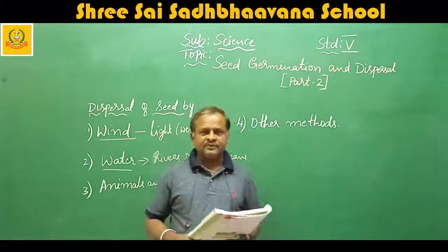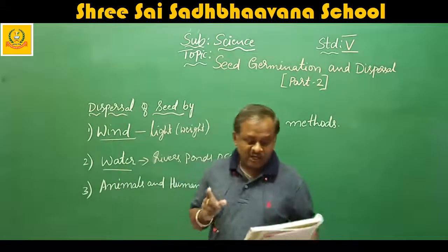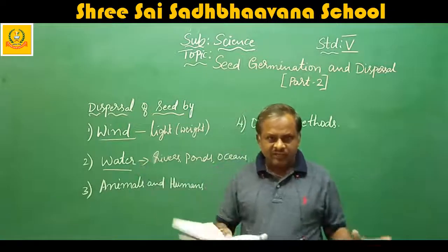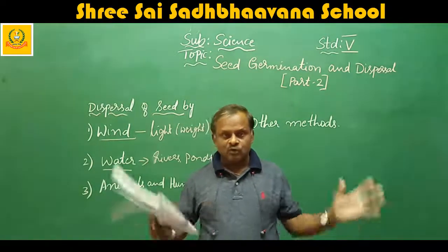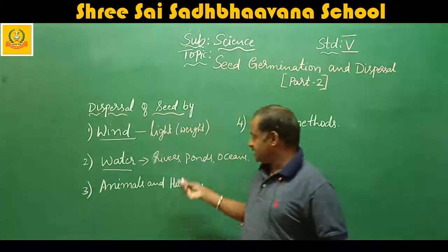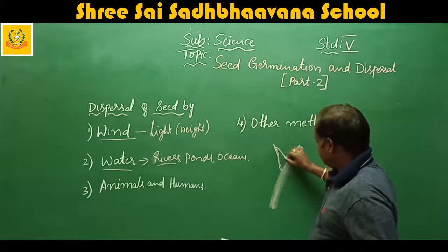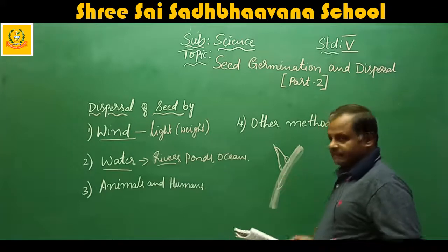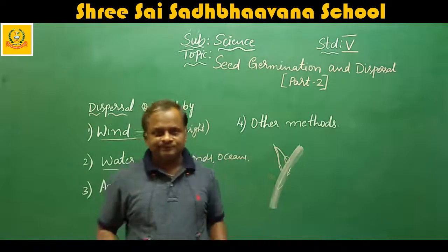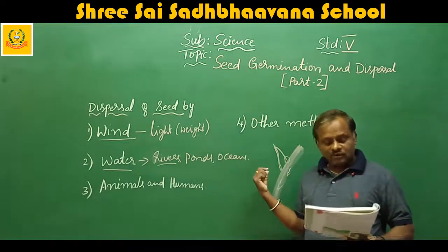Coconut is hollow on the inside and covered with hairs outside, making it light so it can be carried by flowing water over long distances — along sea shores and in rivers. When coconuts fall from trees near river banks, the flowing water carries them to other places where new coconut plants will grow. The lotus plant also grows in the same way.